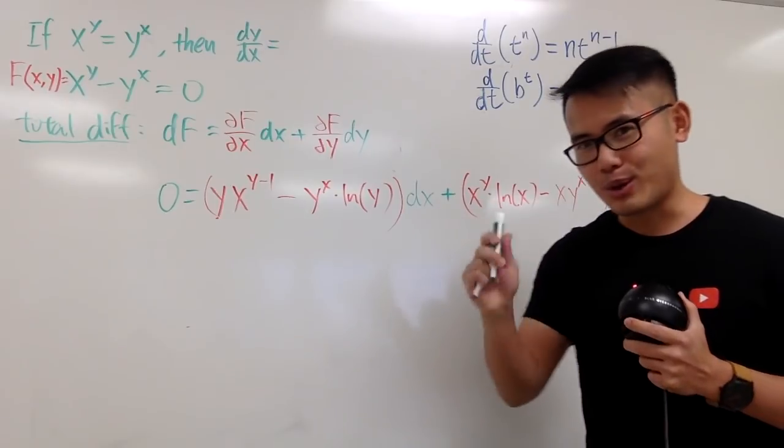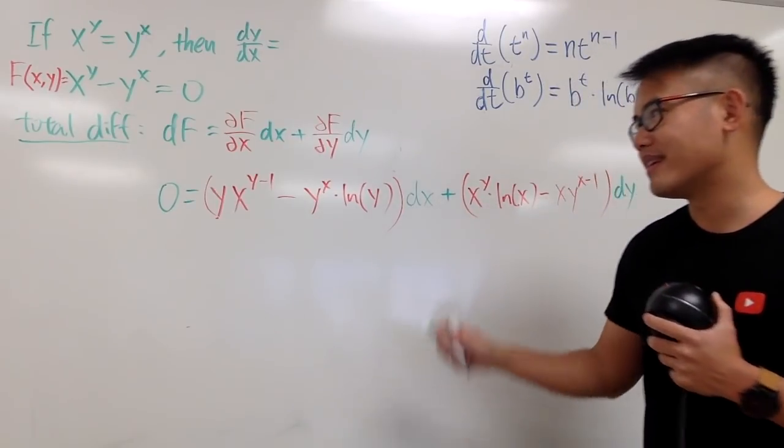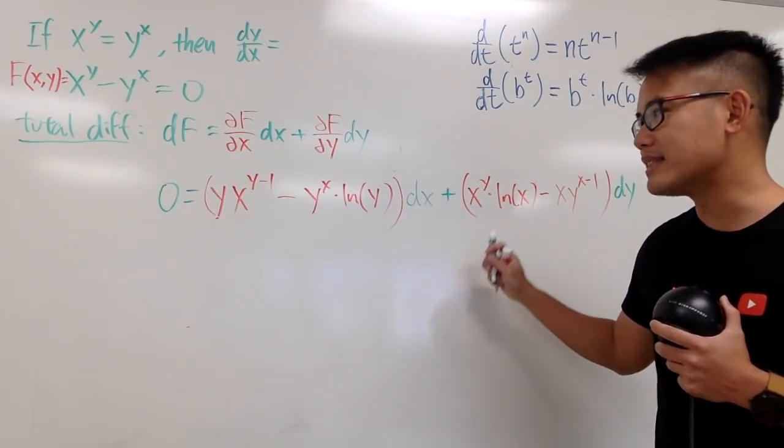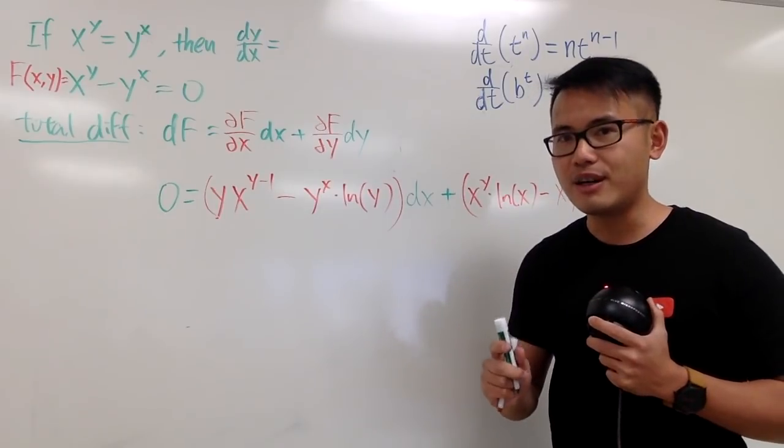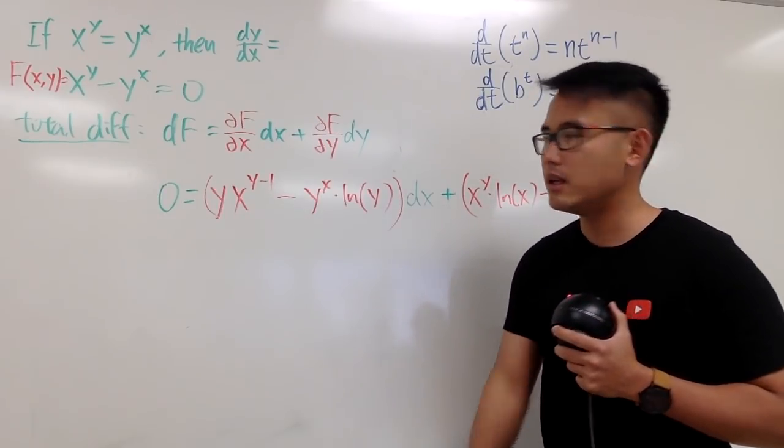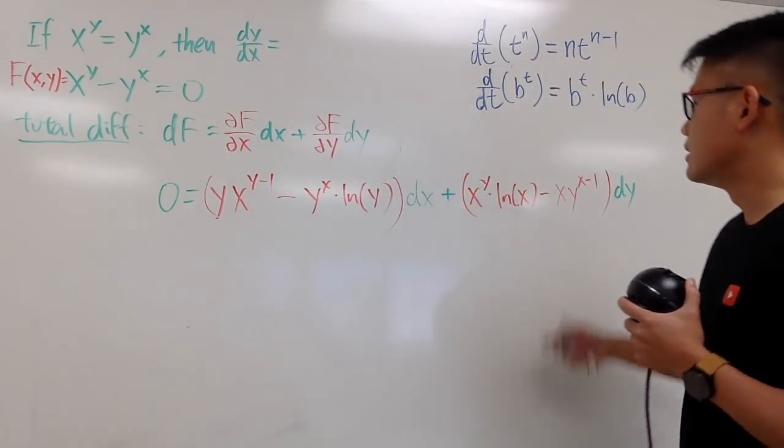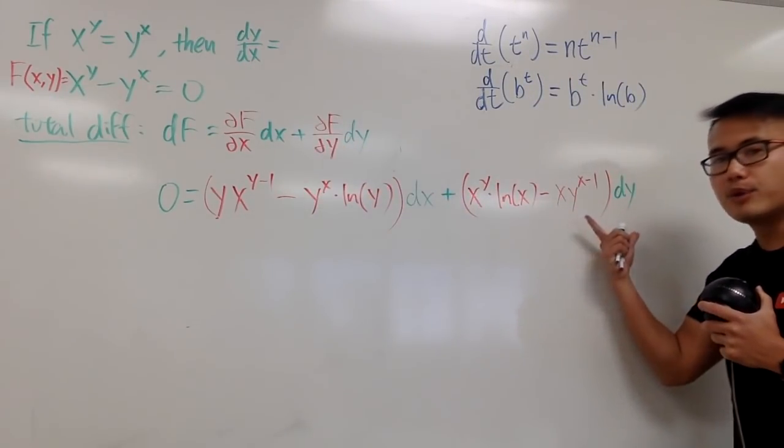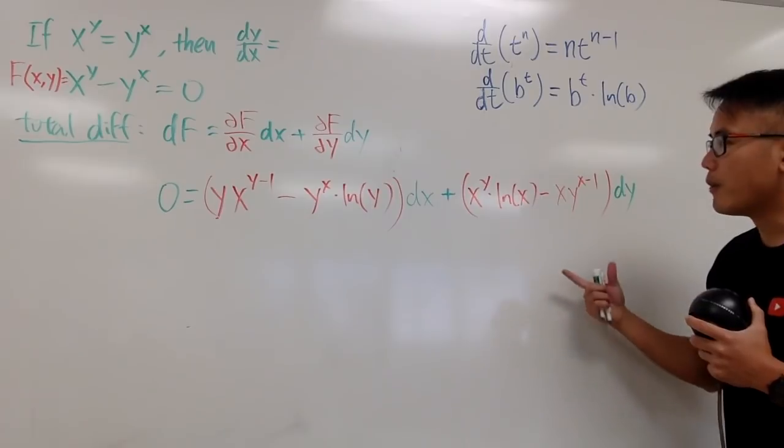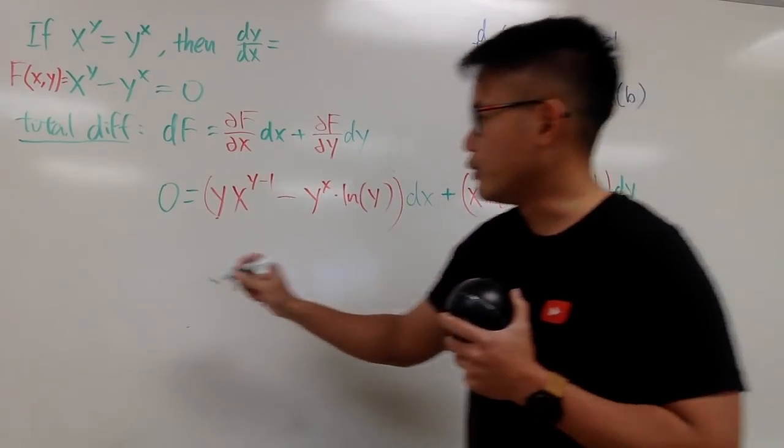This right here is the partial with respect to y. And of course, you attach the dy after that. That's the calculus 3 total differential situation. And of course, I will show you guys that this is indeed the same answer as the one that we got previously. And of course, I want to get dy/dx. Here is the dy part. I am going to maintain this.